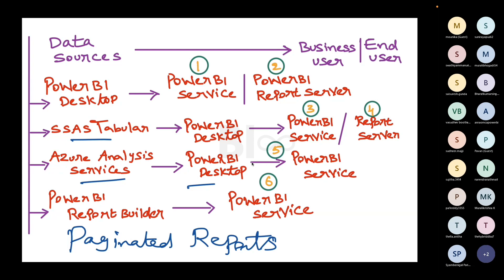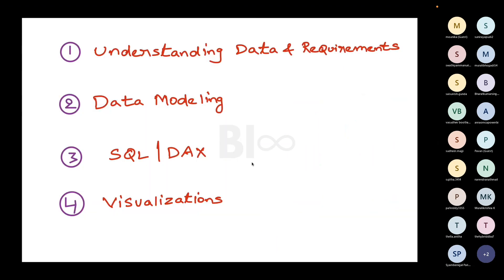I want to cover most of these things to give you exposure before you start looking for jobs. The most important thing to understand is data. Any BI developer should understand data before doing any reporting. Requirements will come from the business — what exactly they expect in the reporting. To accomplish these requirements, you must also understand the data first, because if you don't understand data properly, you cannot give the proper output. You may derive wrong logic or use irrelevant tables.